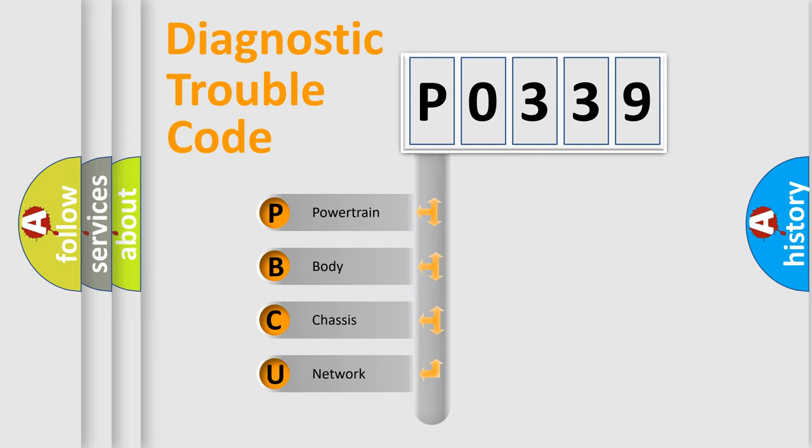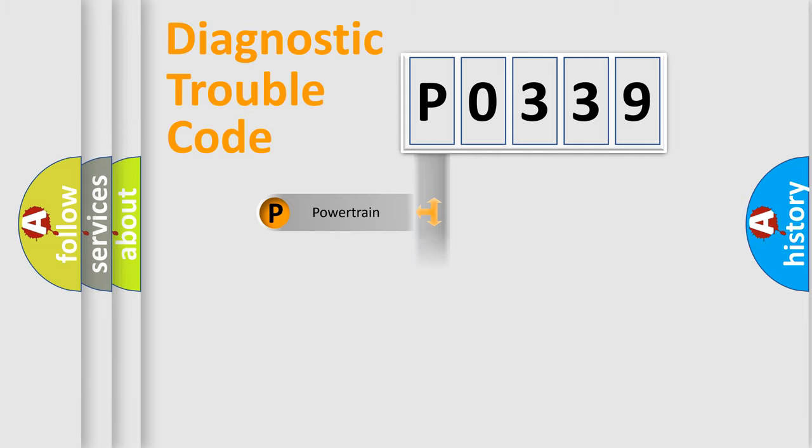We divide the electric system of automobile into the four basic units: powertrain, body, chassis, network. This distribution is defined in the first character code.